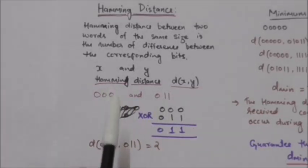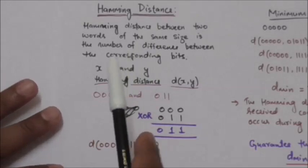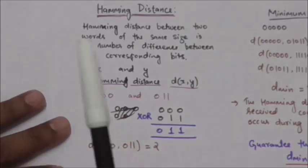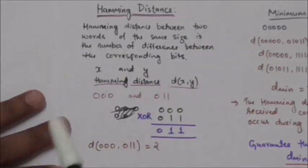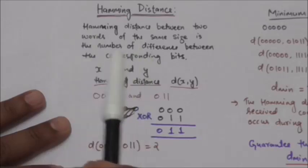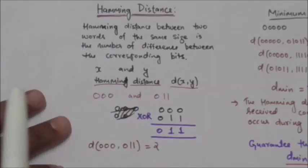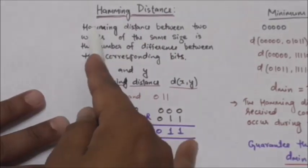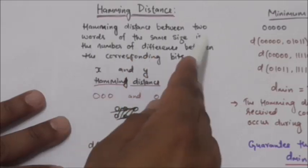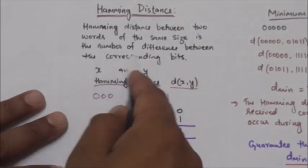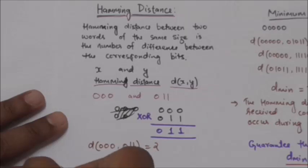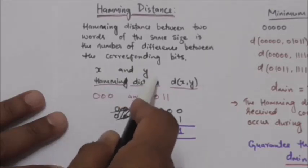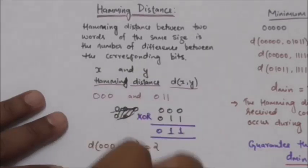Hello friends, welcome back. In this tutorial we will study about Hamming distance. I will give you the idea about Hamming distance and minimum Hamming distance, but how they are used for error correction and detection purposes we will study later in a separate tutorial. In coding for error control, one of the central concepts is the idea of Hamming distance. The Hamming distance between two words of the same size is the number of differences between the corresponding bits. If there are two words x and y, then the Hamming distance between them is shown as d(x,y).